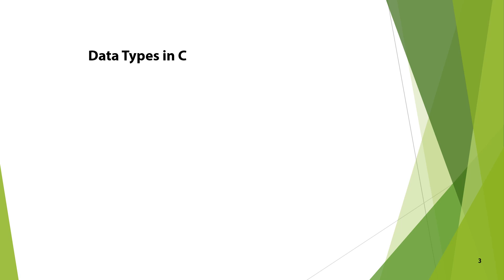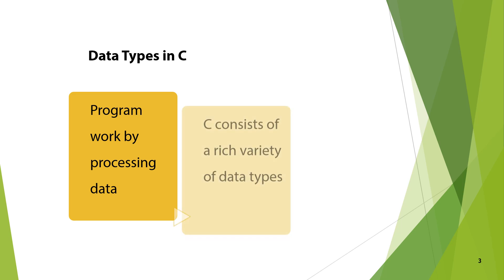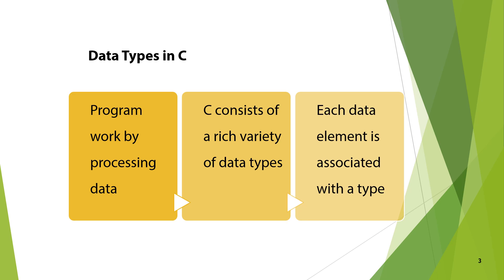We are writing programs because we want to perform some operation or manipulation on data. For that purpose, we should store the data somewhere so the program can access it, because programs work by processing data. Programs get data as input, work on that data, and then we get the required output. Programming languages provide us the facility to store data in different ways. C also has a rich variety of data types. Each data element is associated with a type, so we use a data type with every data element to show in which format we want to store the data.